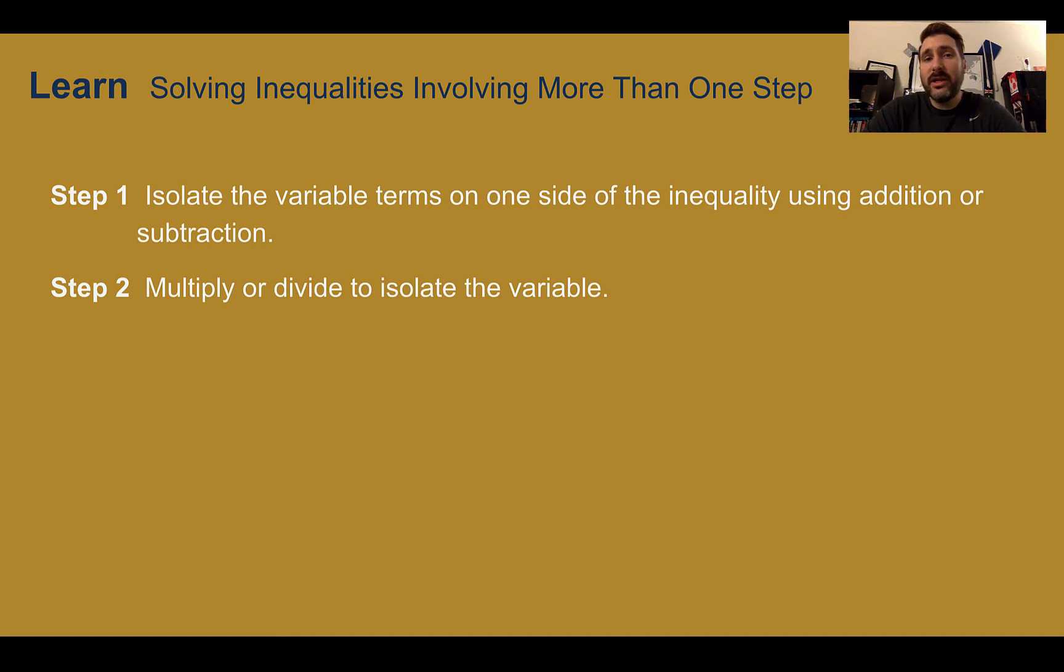In the previous lesson, we learned all the different things to solve one-step inequality, such as adding to both sides, subtracting to both sides, multiplying to both sides, or dividing to both sides. They follow the same rules and procedures as solving for equations. When there's more than one step, it also follows similar to equations. So step one, isolate the variable terms on one side and the constant terms on the other using addition or subtraction. Then step two, multiply or divide to isolate the variable. If we have to distribute or combine like terms, we would also do those ahead of time.